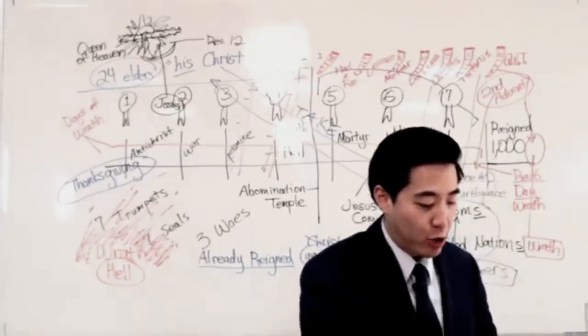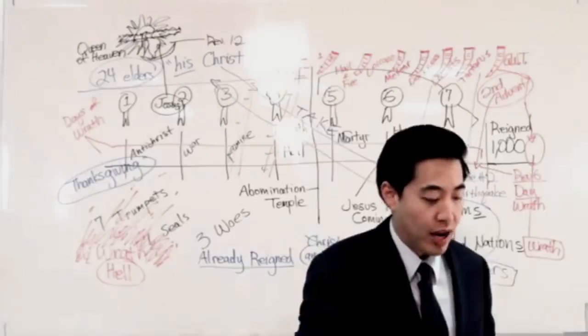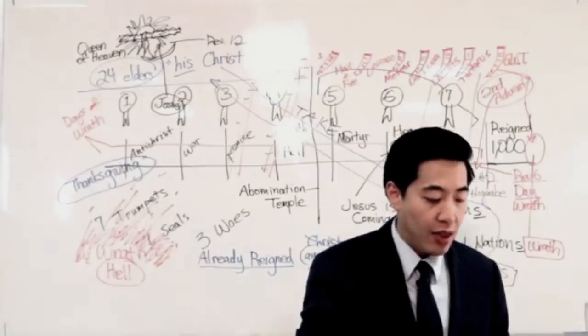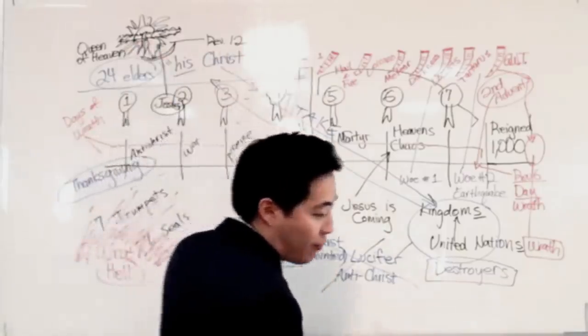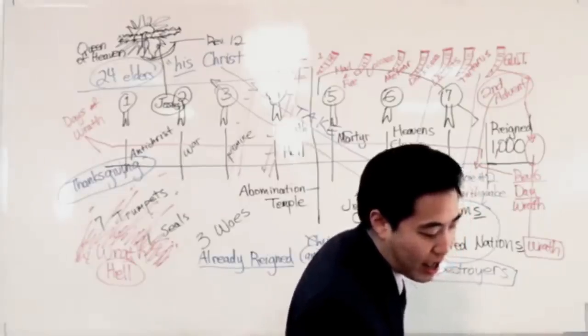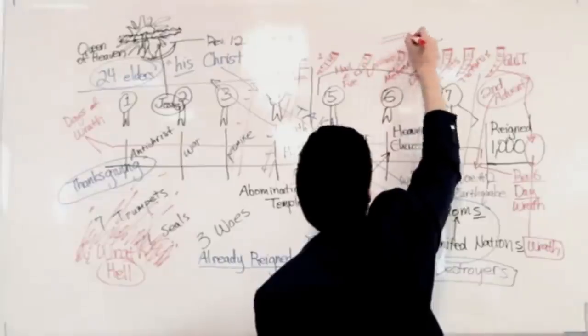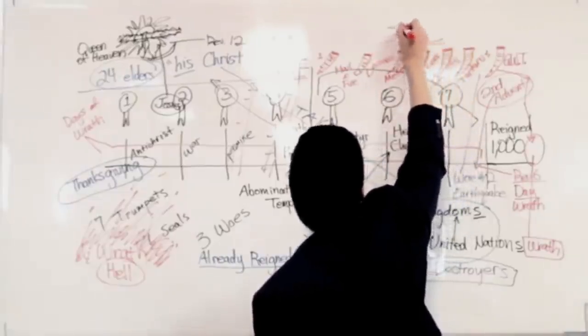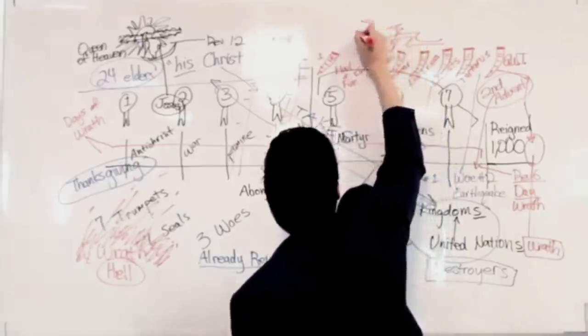Okay, going back to Revelation chapter 12. Here we go, the seven-headed dragon. And there appeared another wonder in heaven. Here's the first wonder in heaven, here's the next wonder in heaven. Who is this? Behold the great red dragon having seven heads and ten horns.